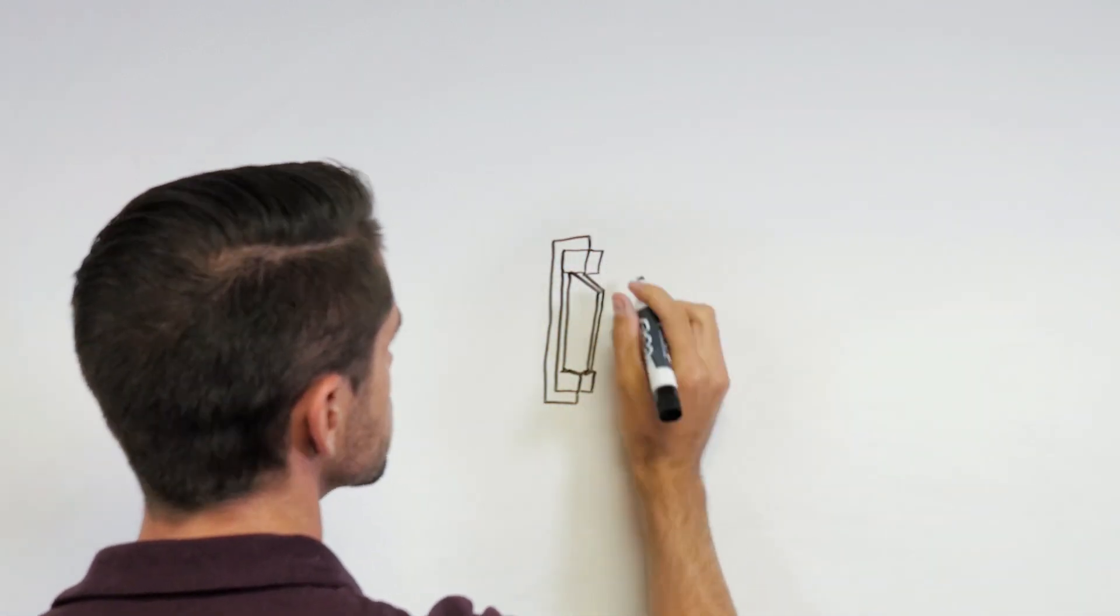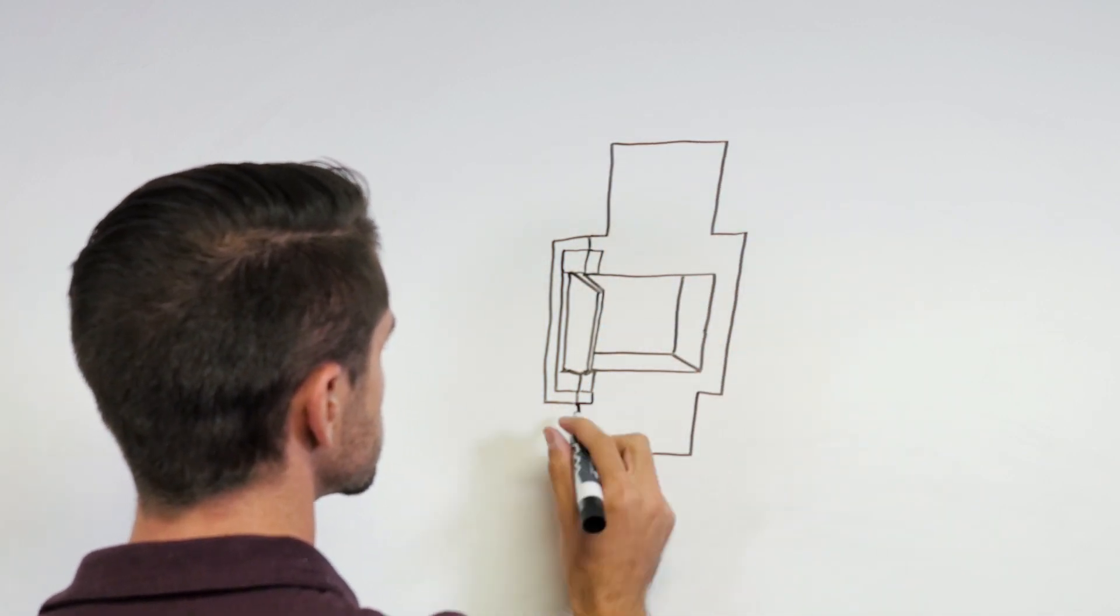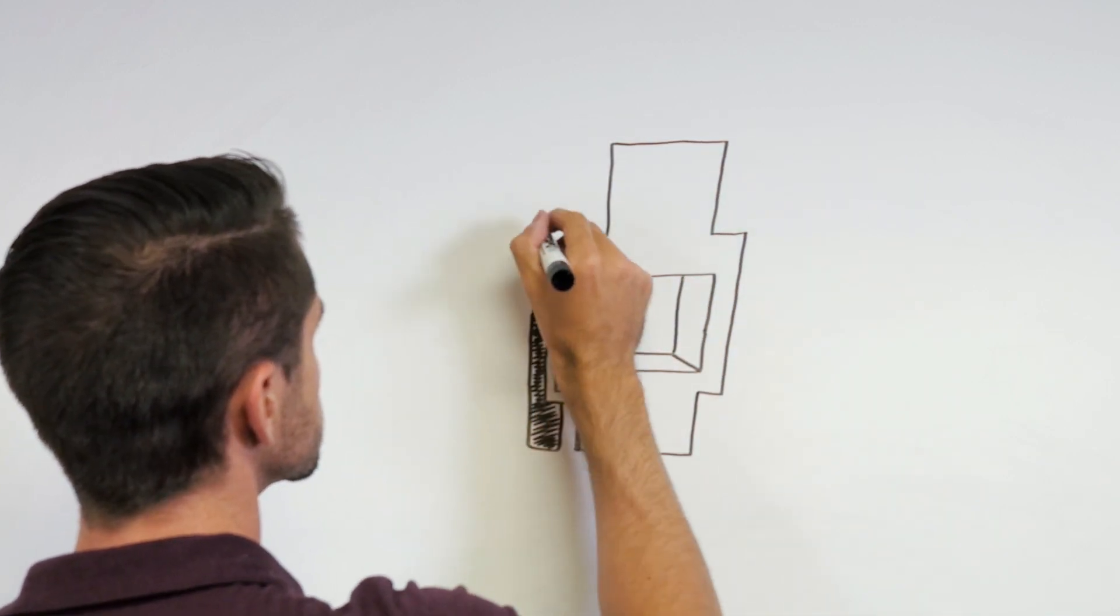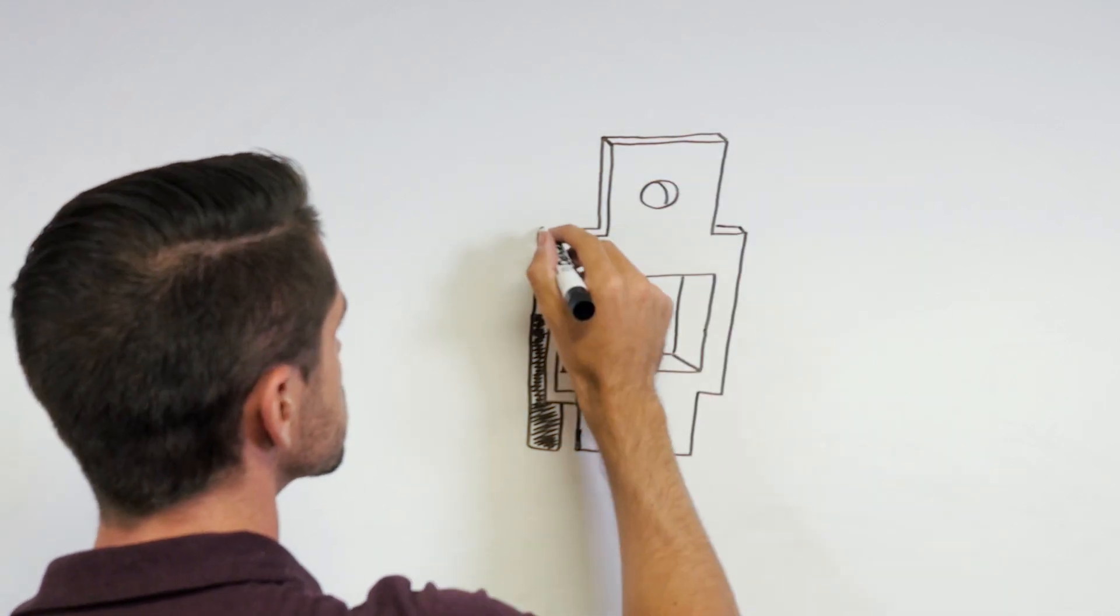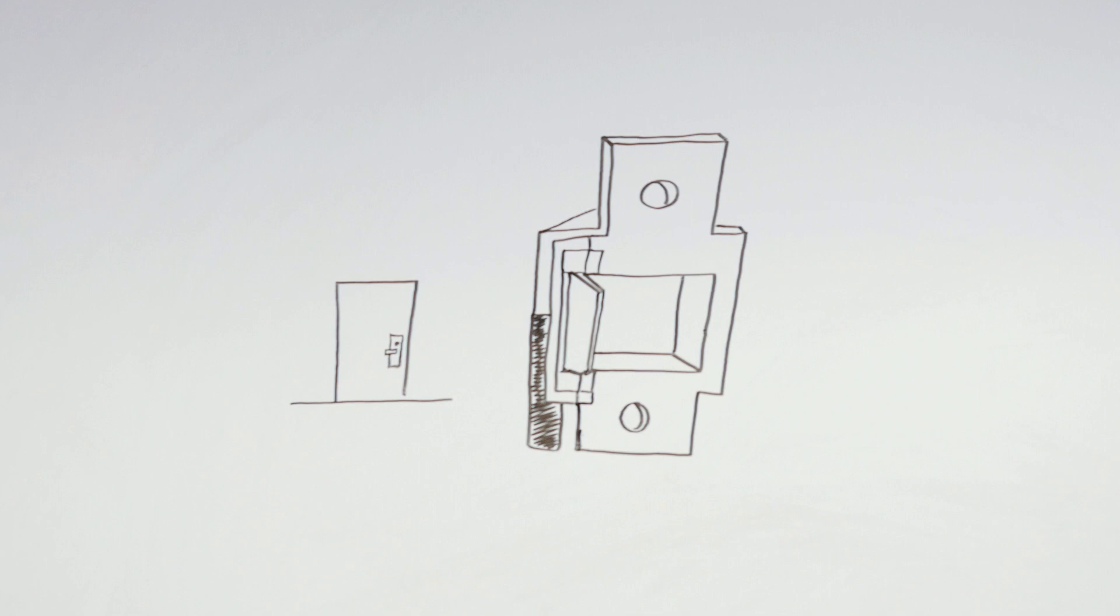Another popular electrified hardware product that can be either fail secure or fail safe is the electric strike. An electric strike has a lip, sometimes called a keeper, that is electrically controlled. It is in the pocket of this lip where the latch is positioned when the door is closed. When the lip is unlocked, it can pivot so a person can open the door from the key side without retracting the latch.